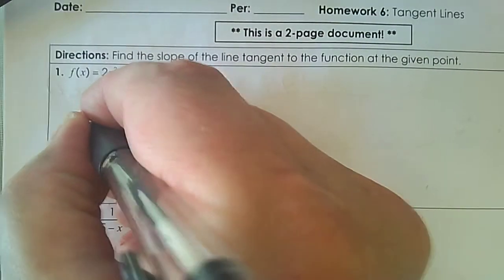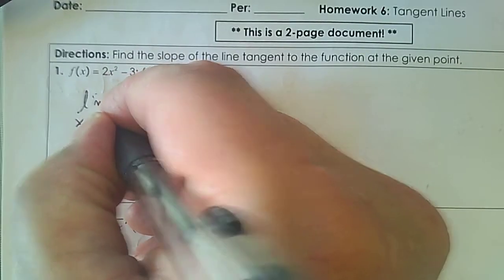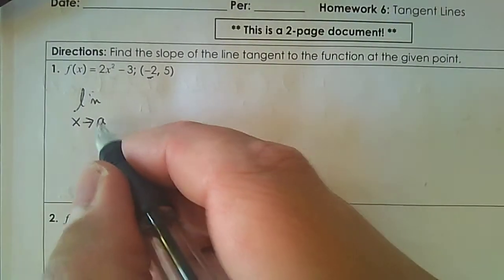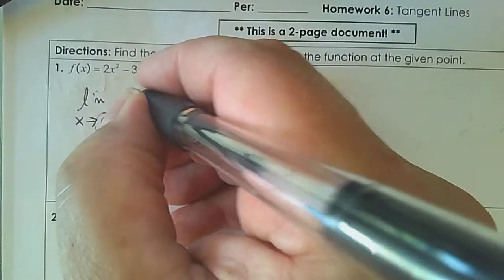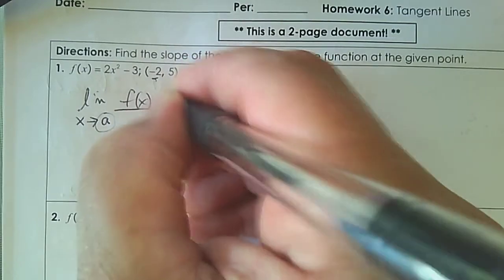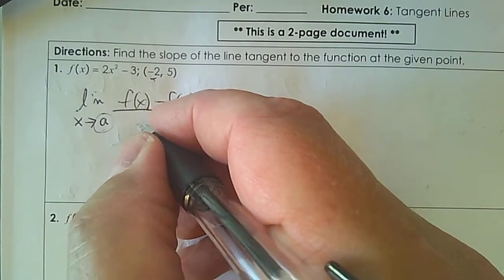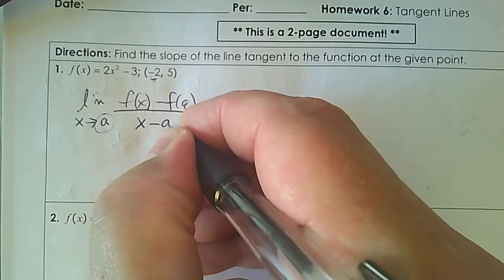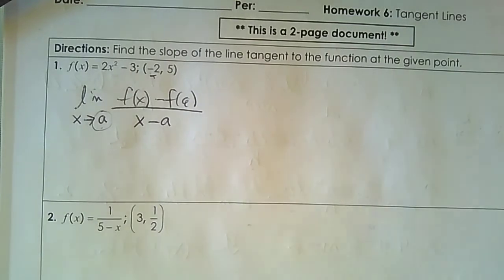If I know the point and x approaches that point at negative 2, I'll call that a. So as I approach the x value, the formula has f(x) minus f(a) in the numerator, and x subtract a in the denominator. In our situation, a is negative 2. This whole formula is a form of the slope formula that will make it easier to get to the answer.